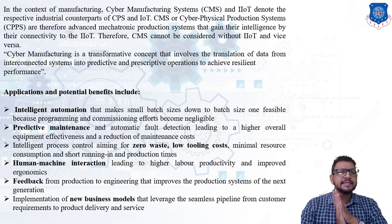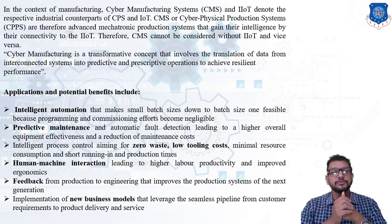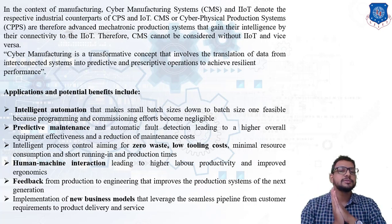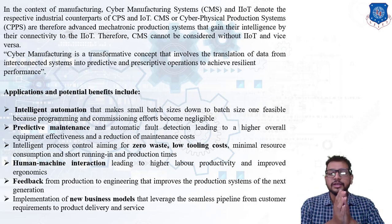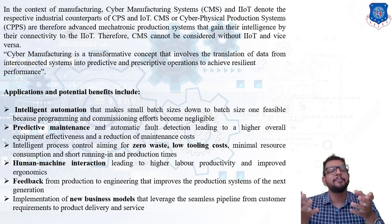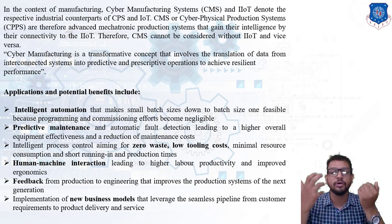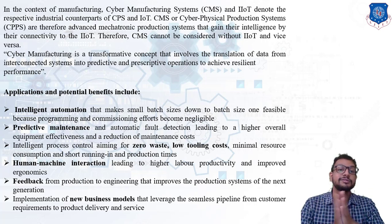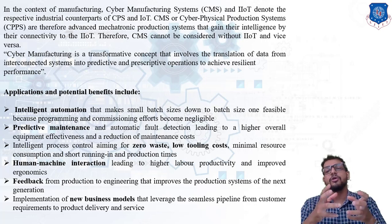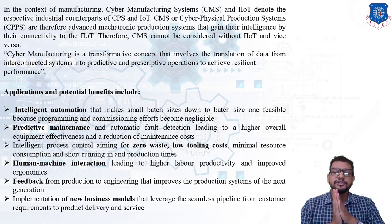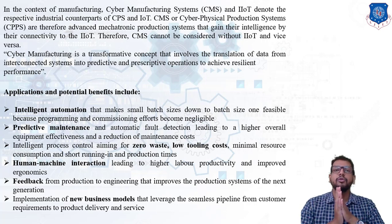Let us see the applications and potential benefits of CPS and IIoT. First is intelligent automation: it makes small batch sizes, down to batch size one, feasible because programming and commissioning efforts become negligible. Next is predictive maintenance: IIoT helps determine when a machine requires maintenance and provides automatic fault detection, reducing overall maintenance costs compared to reactive repairs. Next is intelligent process control, aiming for zero waste, low tooling cost, minimal resource consumption, and short running-in and production times. Also, human-machine interactions lead to higher labor productivity and improved ergonomics.